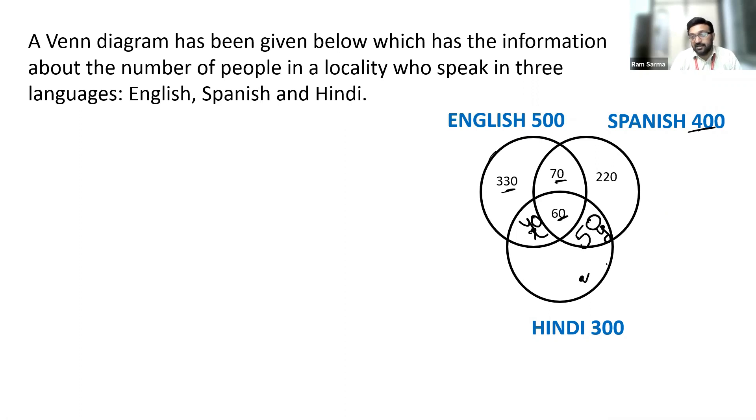Let us try to find this value. Let it be Z. 40 plus 60 is 100. 100 plus 50 is 150. So the remaining value is 150. So we can answer any of the questions based on this.